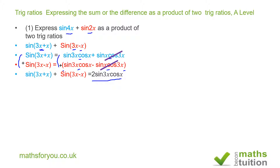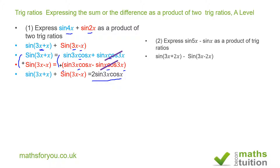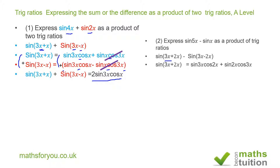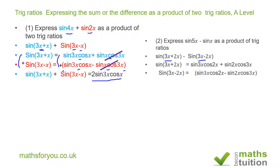For the next example: express sin5x - sinx as a product of trig ratios. Same approach: express 5x as 3x + 2x, and x as 3x - 2x. Expanding the first gives sin3x·cos2x + sin2x·cos3x, and expanding the second gives sin3x·cos2x - sin2x·cos3x. Note there is a minus sign and brackets here.